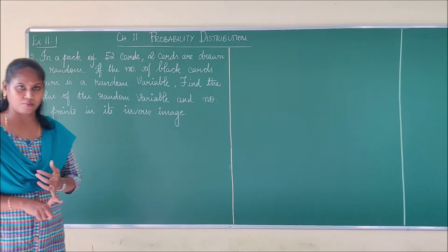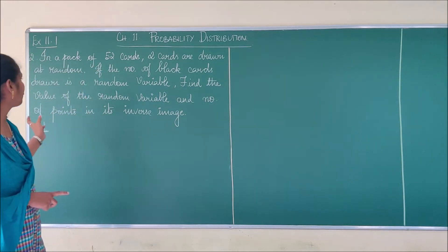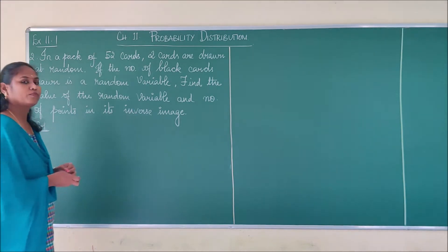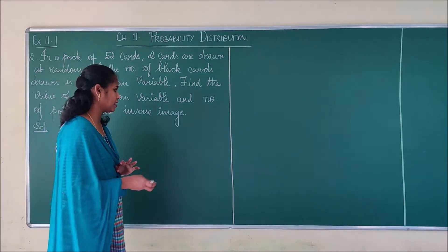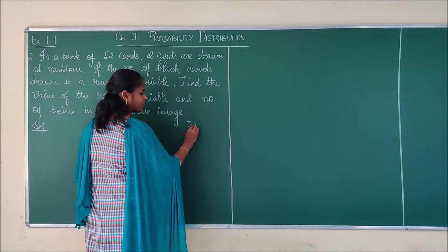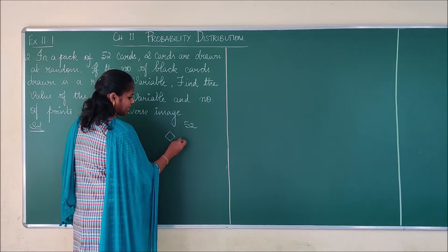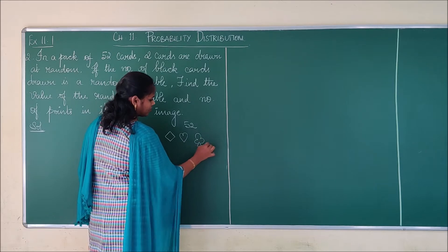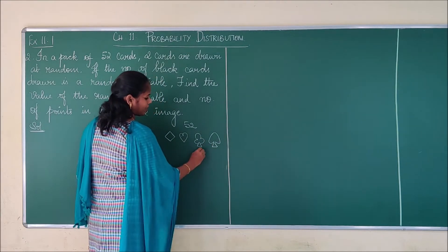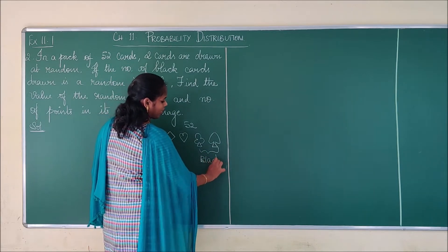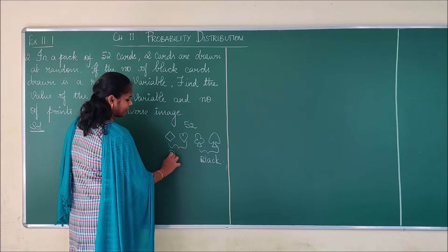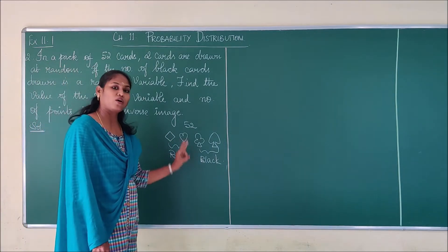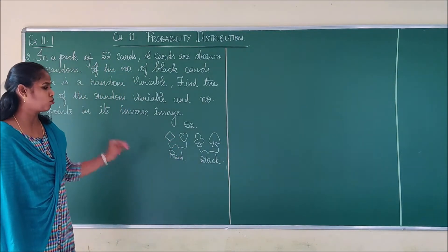You have to find the values of the random variable and the number of points in the inverse image. First, you all know you have 4 different suits in the cards — 52 cards with 4 different shapes. First is diamond and next is hearts, spades and clubs. These 2 suits are black and these 2 are red. So you are going to take 2 cards and find the probability of getting black cards.